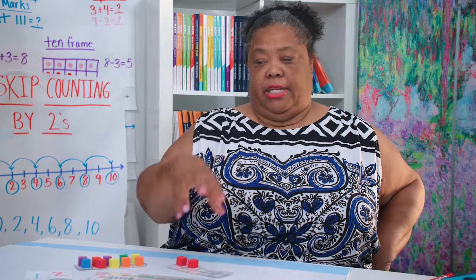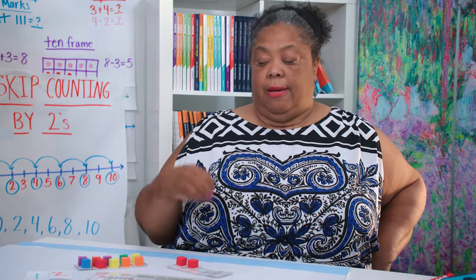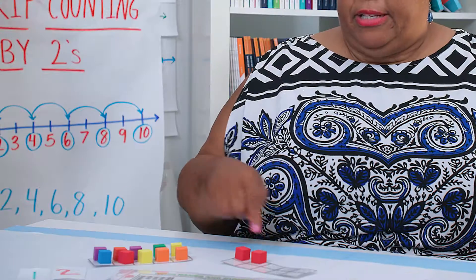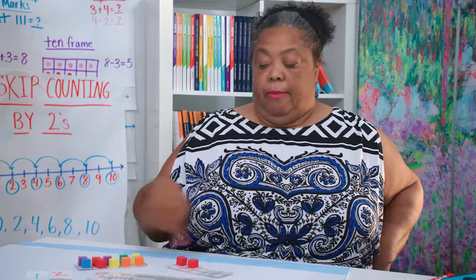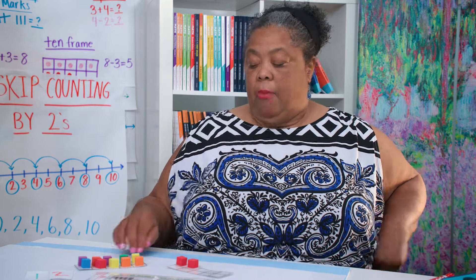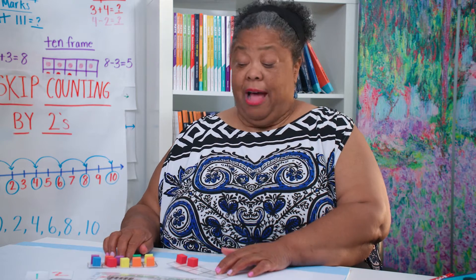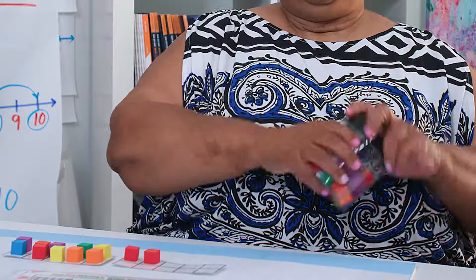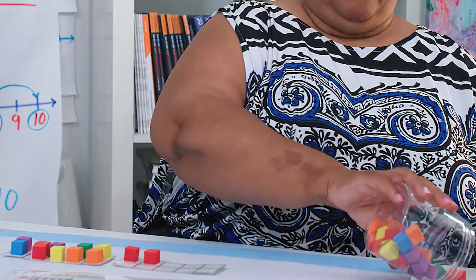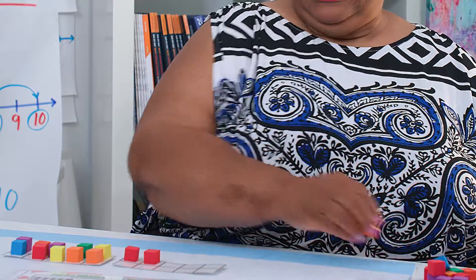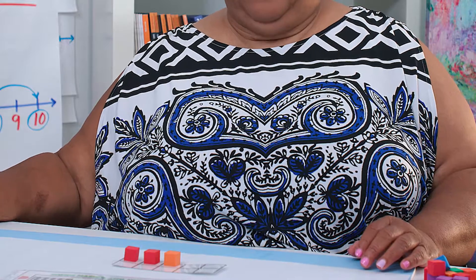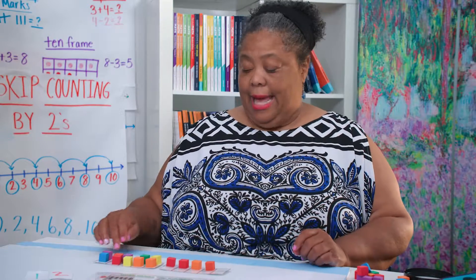I want to show you concrete, representational, abstract with the concept of what happens when you take 10 away from a teen number. As you can see, I have it set up here. I've got the number 12, and I want kids to see: if I've got 12 and I take 10 away, I only have two left. If I have 13 and I take 10 away, I have three left. If I have 14 and I take 10 away, I have four left.